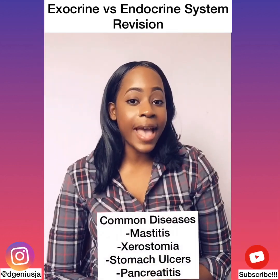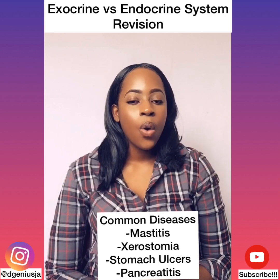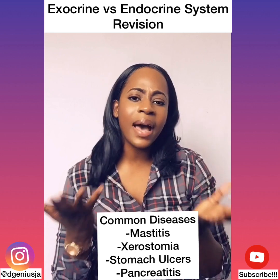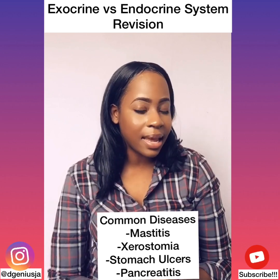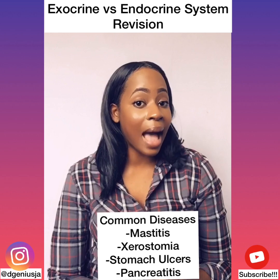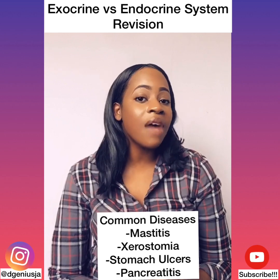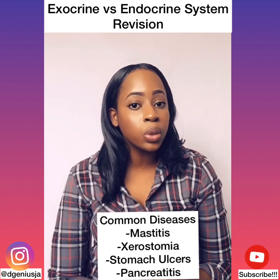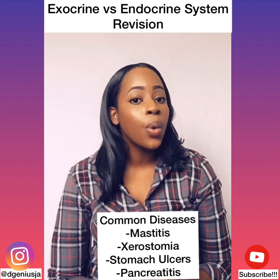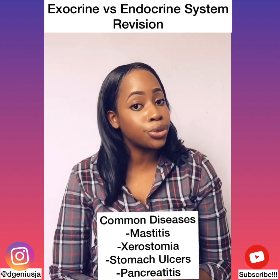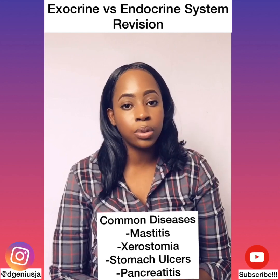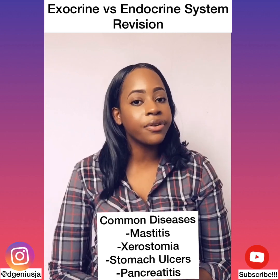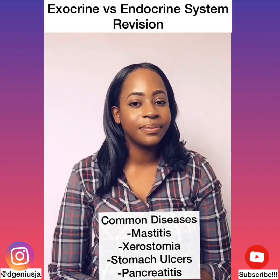Let's look at some diseases of the exocrine glands. Whenever we have an interference with the normal functioning of these glands, we might have problems arising. For example, whenever the mammary glands become inflamed, we have a condition called mastitis. Whenever there's an inadequate amount of saliva being produced, we have xerostomia, or dry mouth. Whenever we have an inflammation of the pancreas, we have pancreatitis.